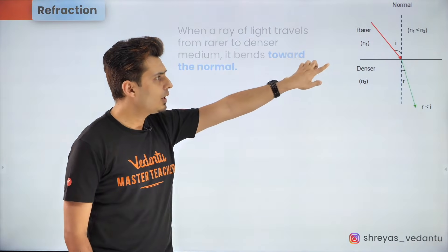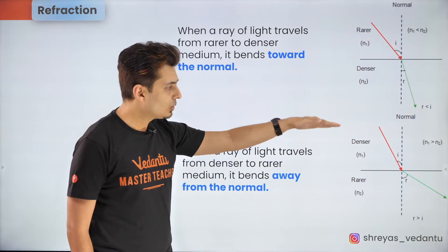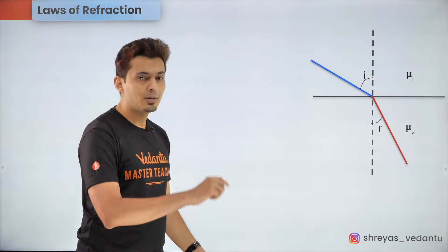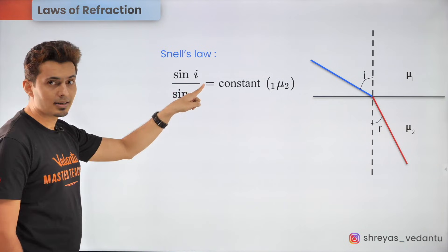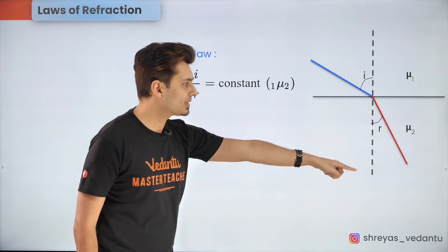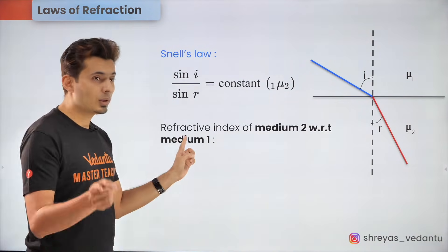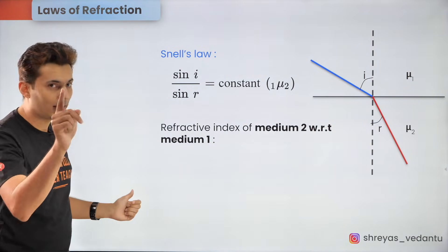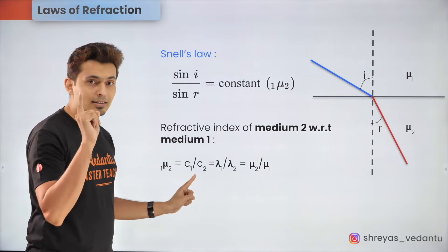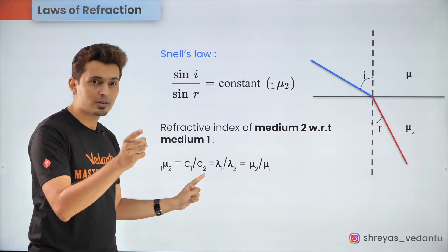When light rays go from a rarer medium like air to a denser medium like water, they bend towards the normal. But if they go from a dense medium like glass to a rarer medium like air, they bend away from the normal. The relationship between the angle of incidence and the angle of refraction is given by Snell's law, which states that sin(i)/sin(r) is constant for a given pair of media, denoted as ₁μ₂ (the relative refractive index of medium 2 with respect to medium 1). Also, ₁μ₂ equals the speed of light in medium 1 divided by the speed in medium 2, and also equals the wavelength in medium 1 divided by the wavelength in medium 2, because the frequency of light does not change.